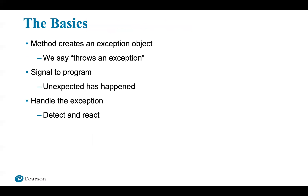Here are the basics. When an exception occurs within a method, the method creates an exception object and gives it to the Java runtime system — we say that a method throws the exception. Throwing an exception is a signal to the rest of the program that something unexpected has happened. Code can react appropriately to an exception based on its class type. We handle the exception when we detect and react to it.